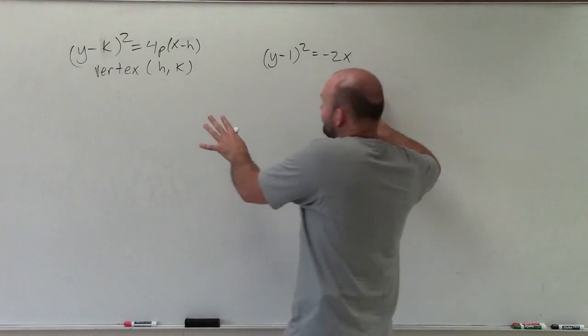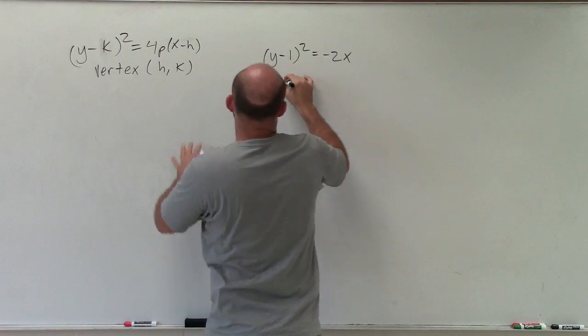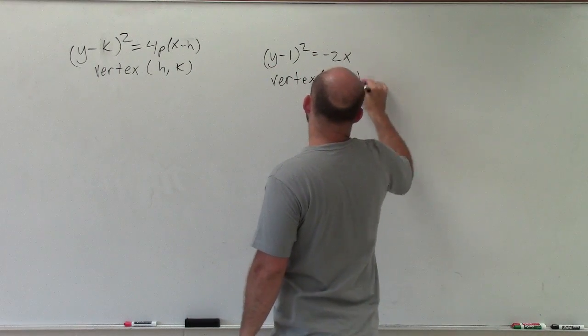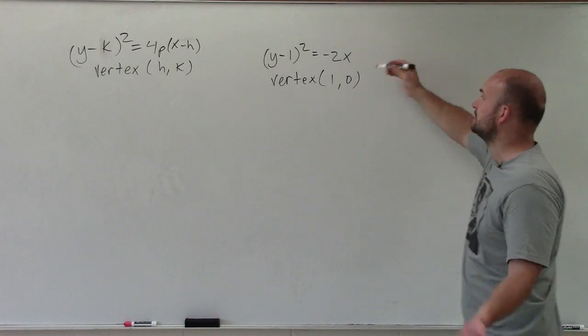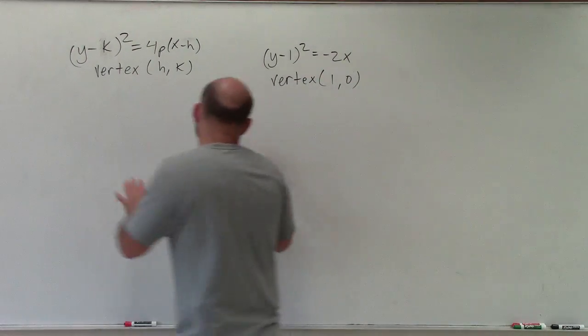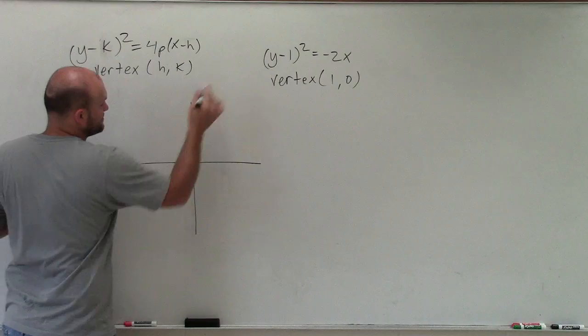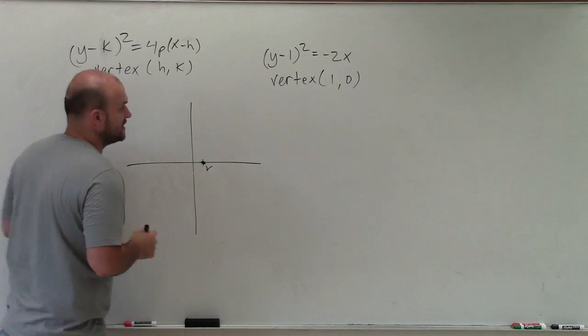So just looking at this information, I can obtain that my vertex is going to be at 1 comma 0. I'm not subtracting x from anything, so I'm at 1 comma 0. Perfect. So let's go ahead and graph that so far. That's my vertex, 1 comma 0.